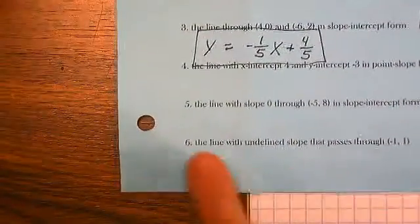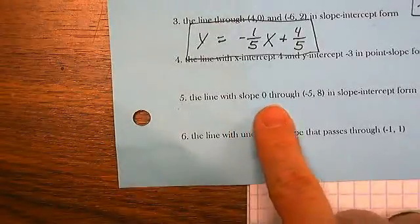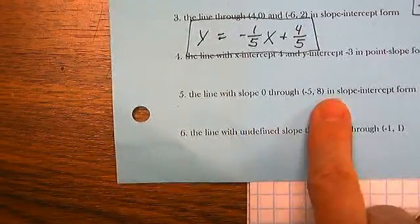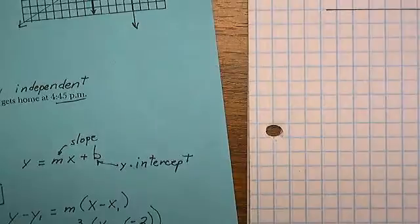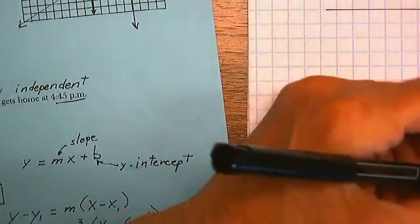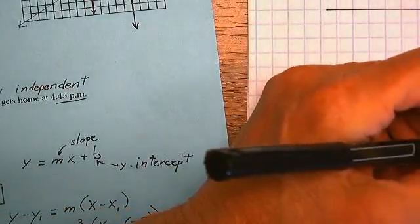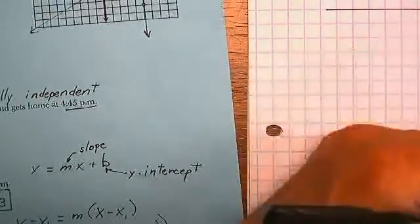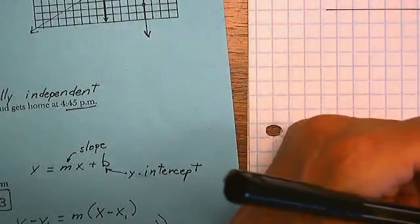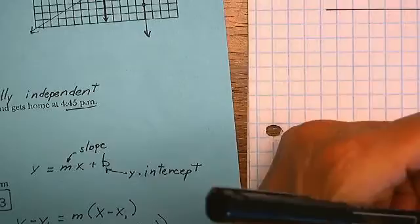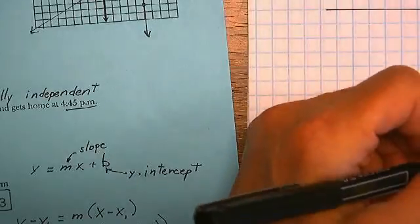First we draw a picture. The line with slope 0 through negative 5, 8. Okay. Negative 5, 8. Let's see whether I counted correctly. 2, 4, 5. Negative 5, 8. 2, 4, 6, 8.